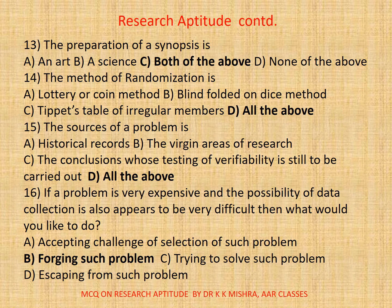Question 14. The method of randomization is: a. Lottery or Coin method. b. Blindfolded or Dice method. c. Tippets table of irregular numbers. d. All. The correct option is d. All.